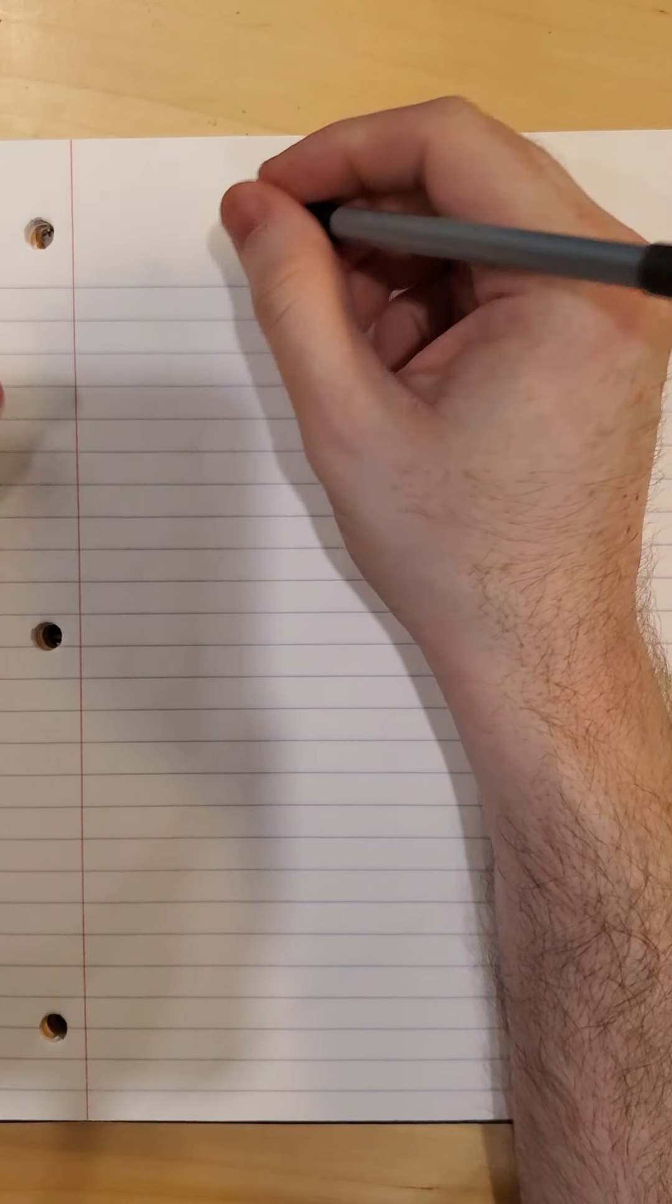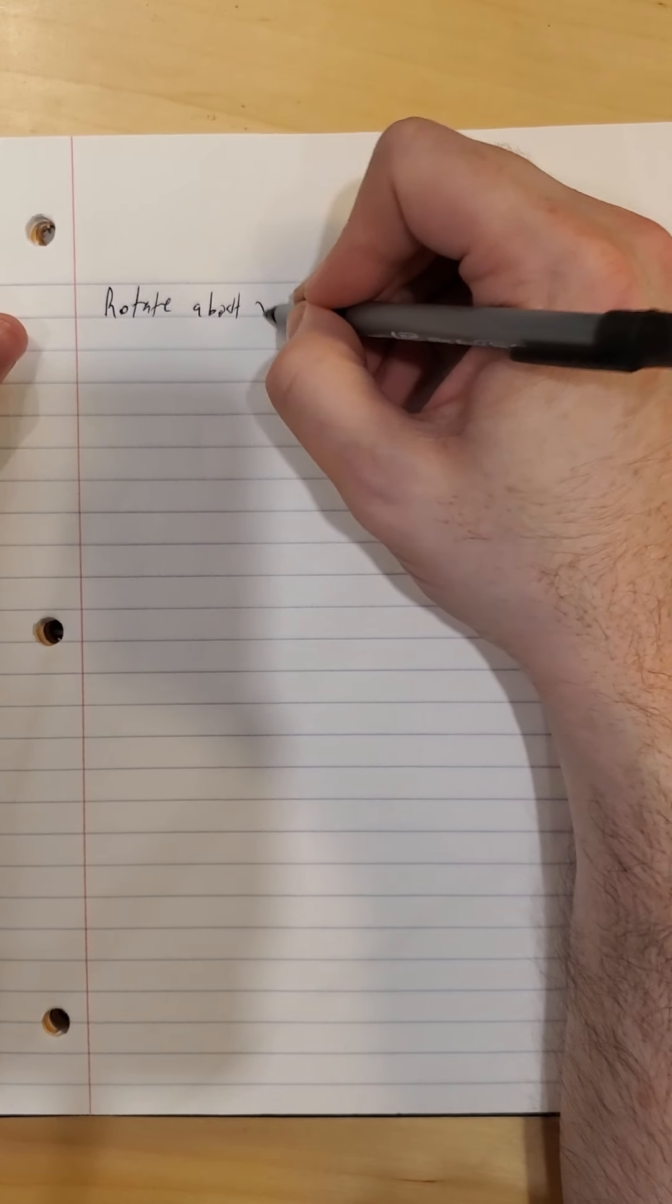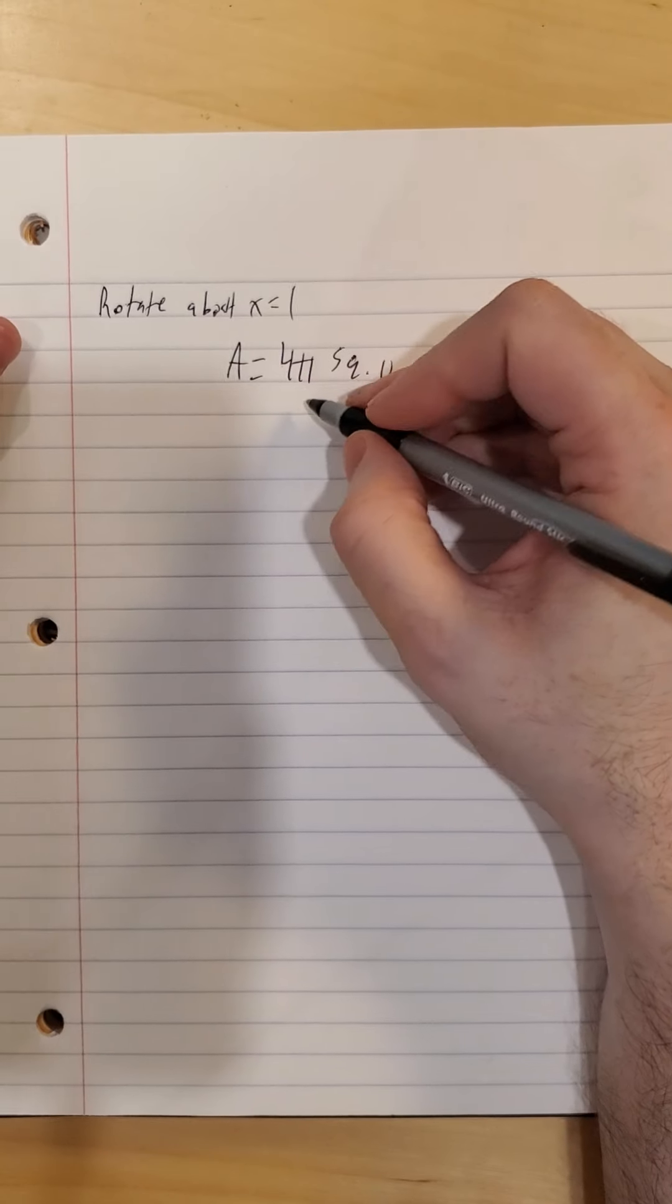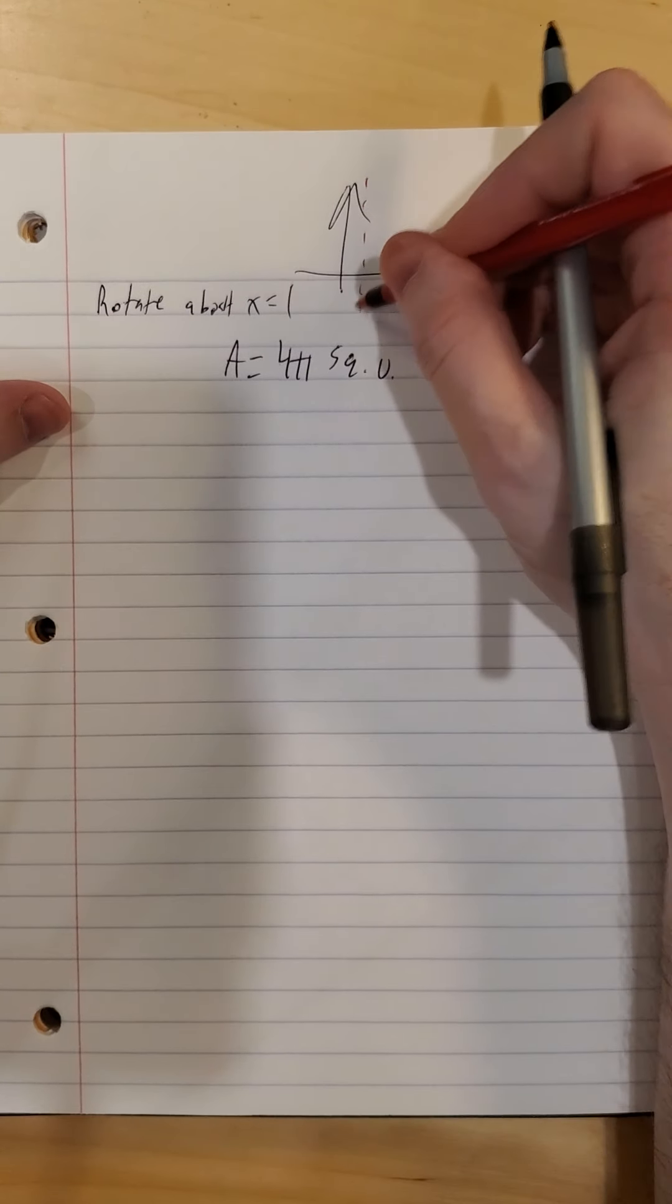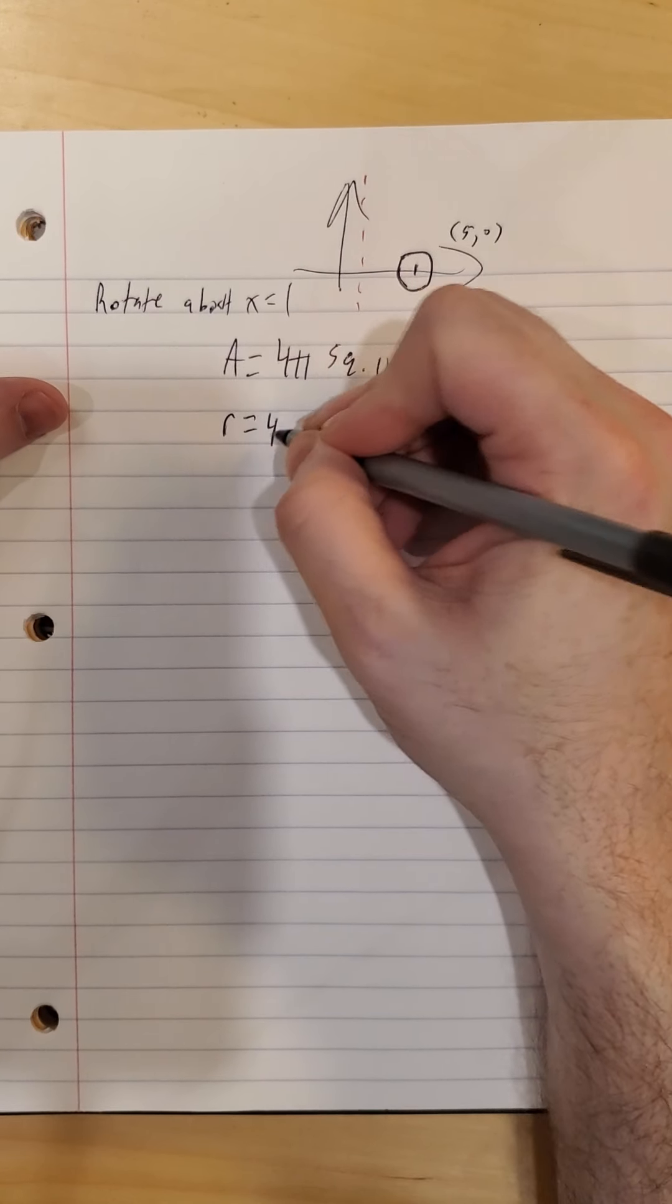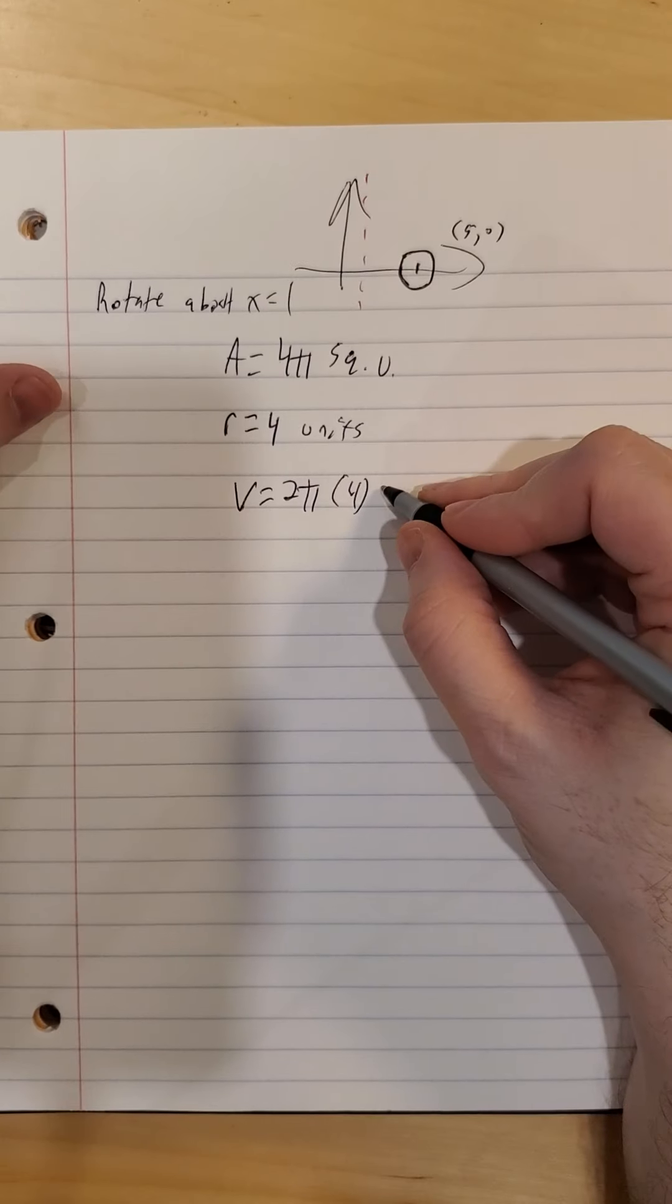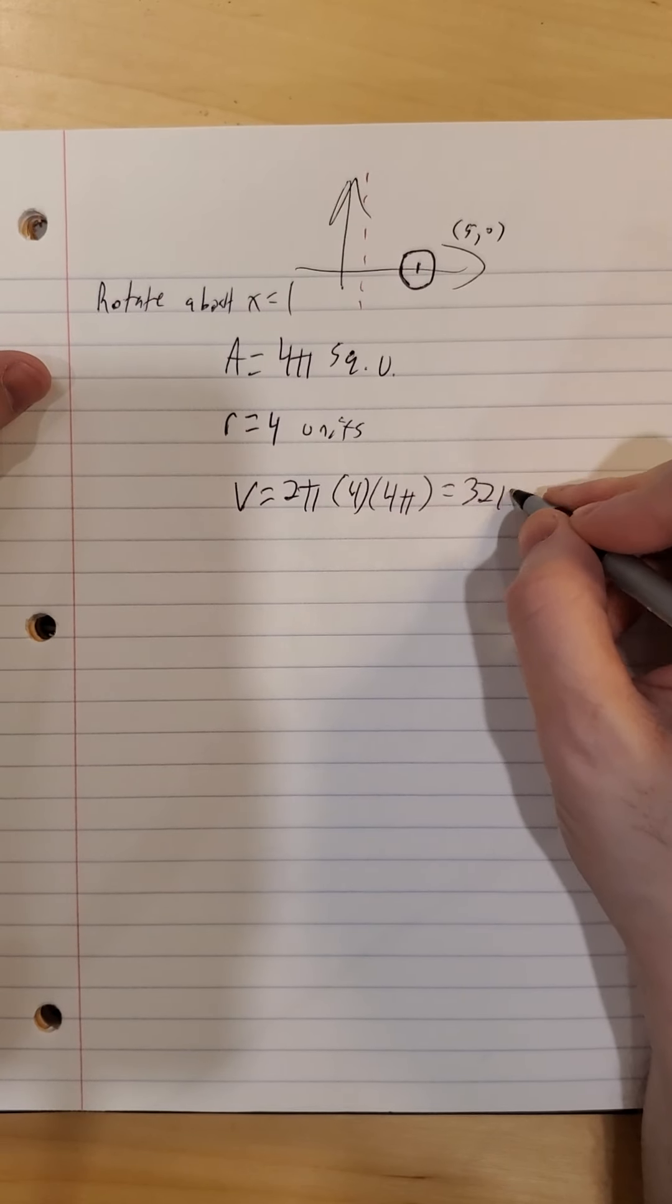So, if I change just one thing on there, let's say we switch over and we rotate about x equals 1. Area is still the same, 4 pi square units. But, our radius. Remember, the center is at 5, 0. So, 1 to 5 is 4 units now. So, our volume, 2 pi times the new radius of 4 units times the area is still 4 pi square units. So, we have 32 pi squared cubic units.